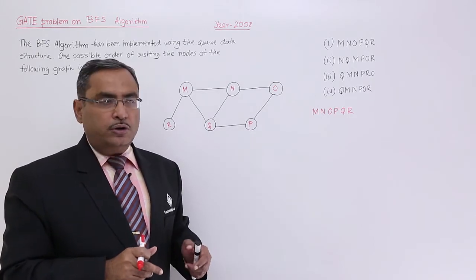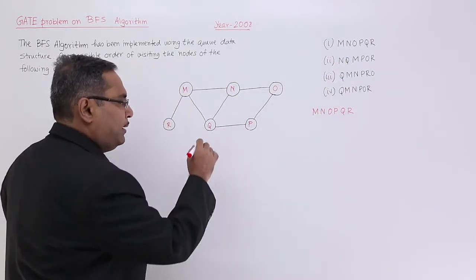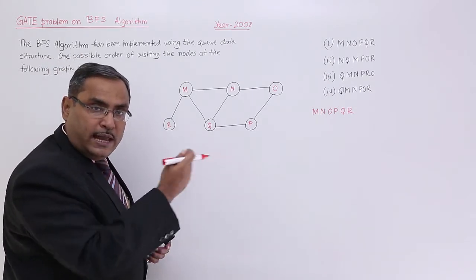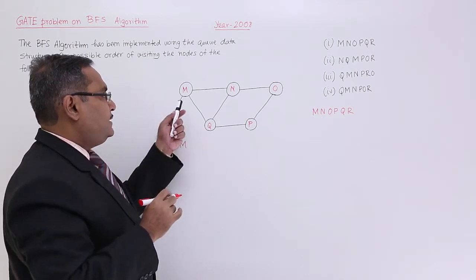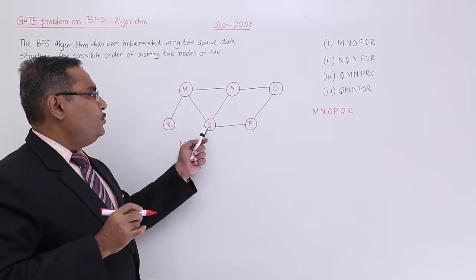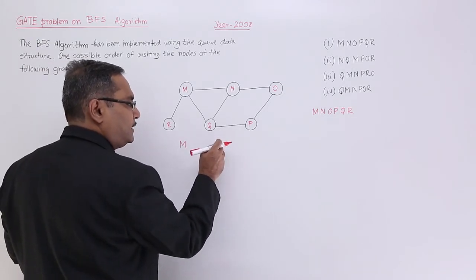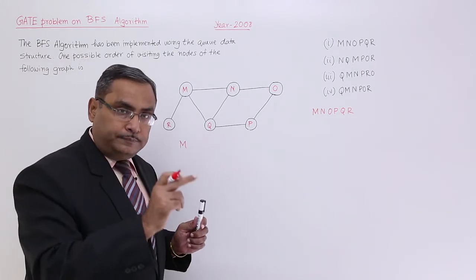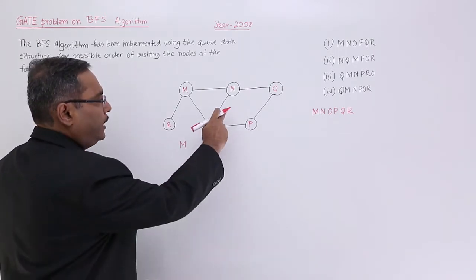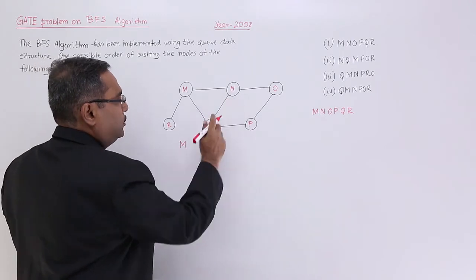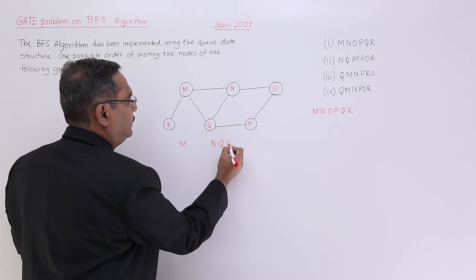Now let me start with the solution. First, they are starting with M. M will be put in the queue and then taken out. The adjacent nodes for M are R, Q, and N. They will be inserted in the queue in alphabetical order, so N will be there, then Q, then R.